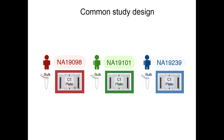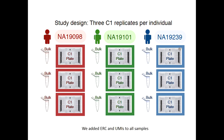The biggest problem currently is that practically all of the datasets collected use a study design where each individual is processed for single-cell characterization — whether gene expression, ATAC, or any other epigenetic modification — using a single batch. This means immediately that the batch and the individual genotype are entirely correlated. So how big of a deal is it?